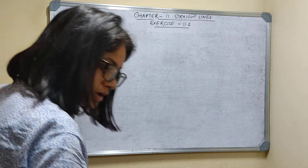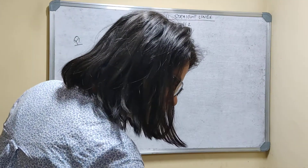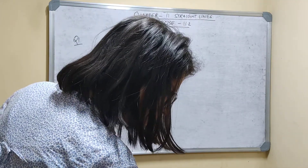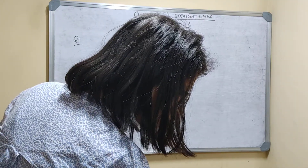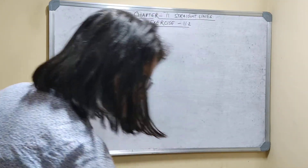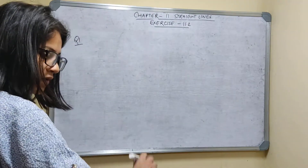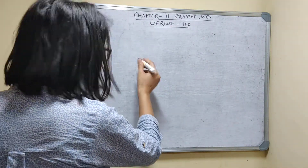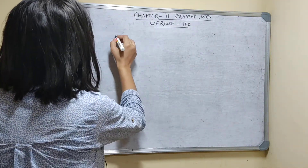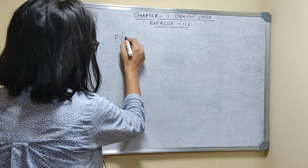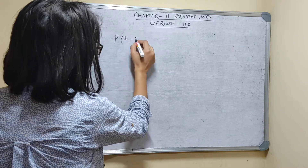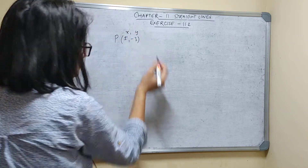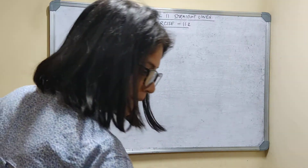Find the new coordinates of the point (5, -3). So let's say this point is P, given as (5, -3). This is X and this is Y.